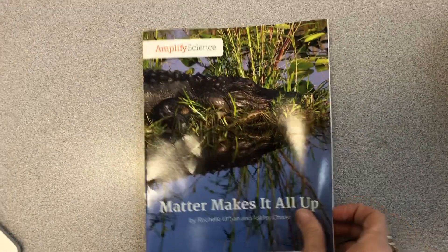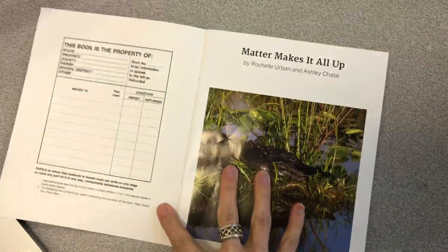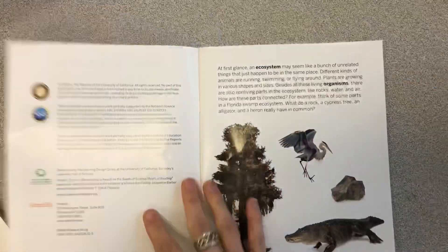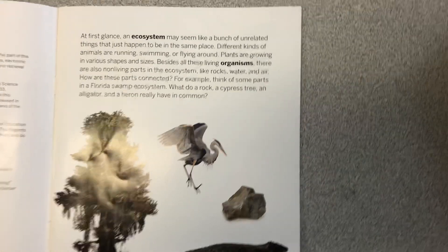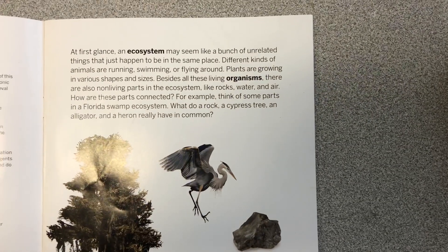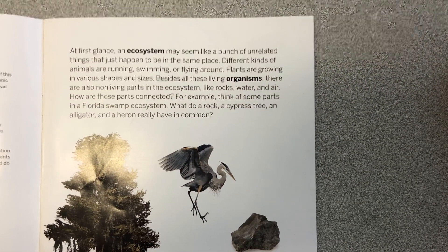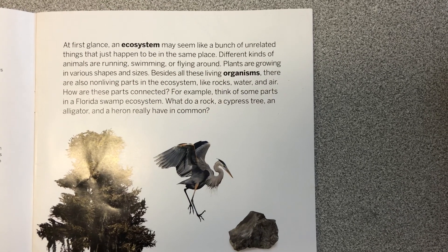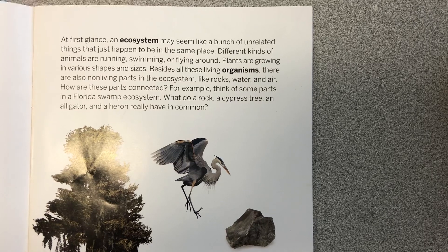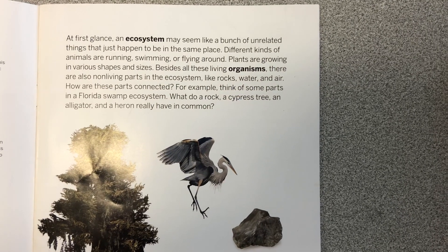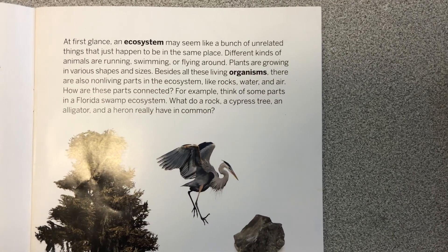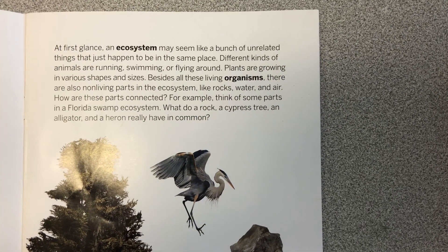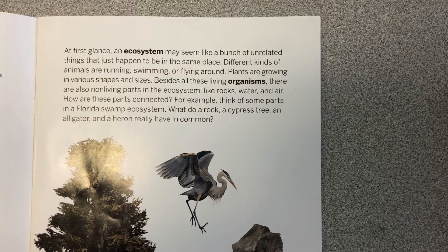Matter makes it all up. At first glance, an ecosystem may seem like a bunch of unrelated things that just happen to be in the same place. Different kinds of animals are running, swimming, or flying around. Plants are growing in various shapes and sizes. Besides all these living organisms, there are also non-living parts in the ecosystem, like rocks, water, and air.